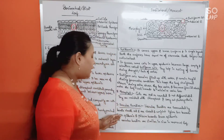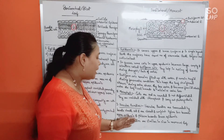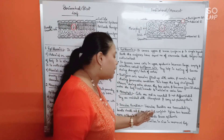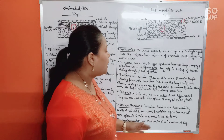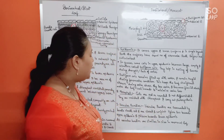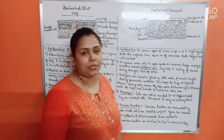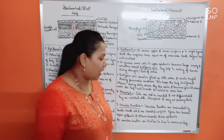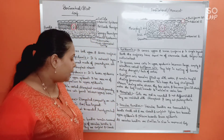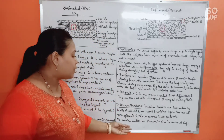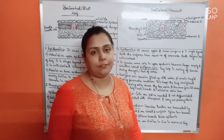The vascular bundles are surrounded by bundle sheath cells, just like in the dicot leaf, and are closed and conjoint — again similar to the dicot leaf. Xylem lies towards the upper epidermis and phloem towards the lower epidermis. Everything is the same, with one very important difference: all vascular bundles are similar in size in the monocot leaf.